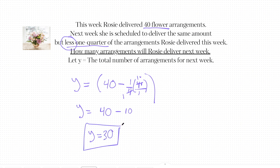Notice this equation — the first part has the first value, which is 40, and the second part shows how much it is when it's one quarter less than the original amount.